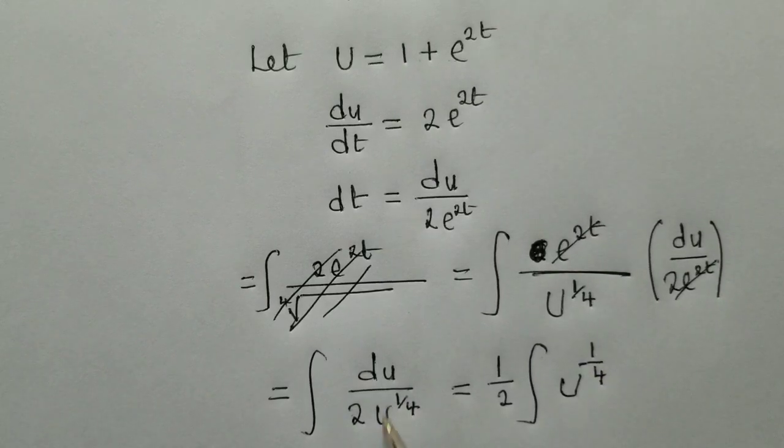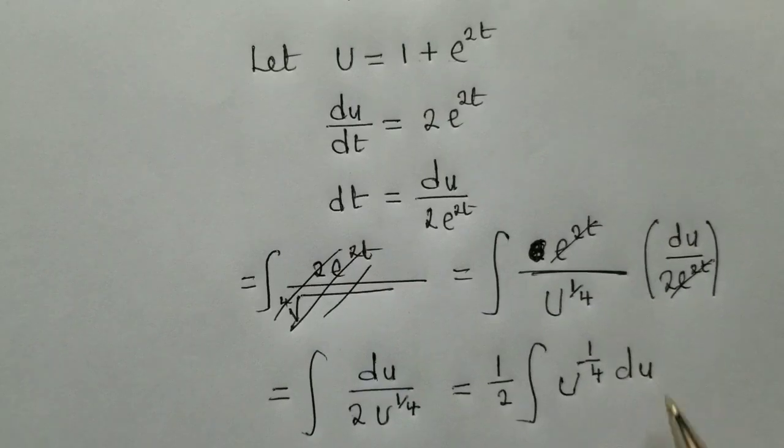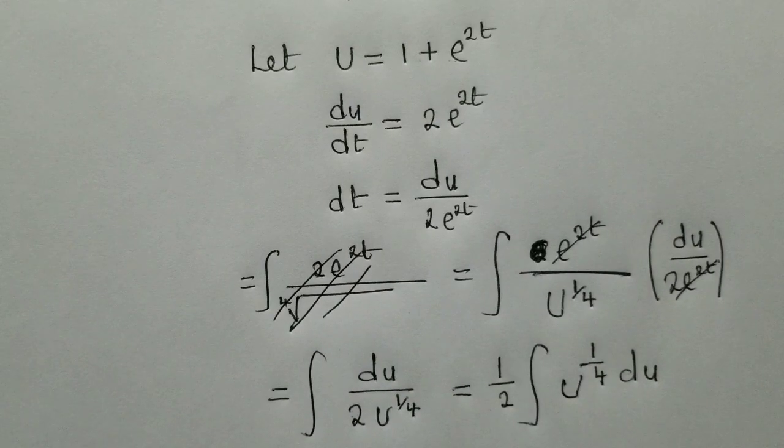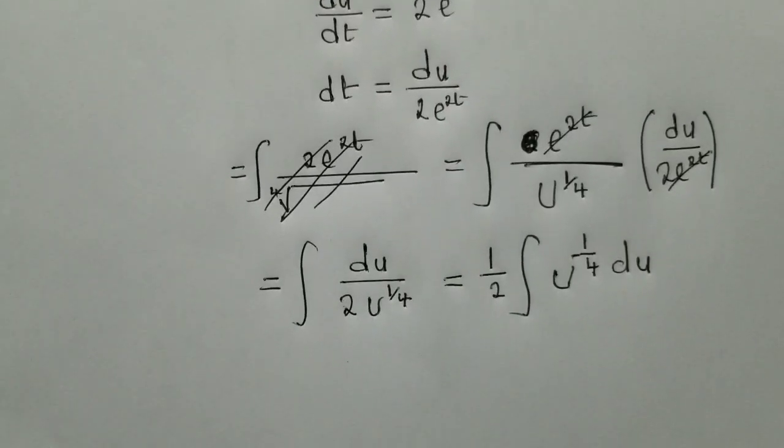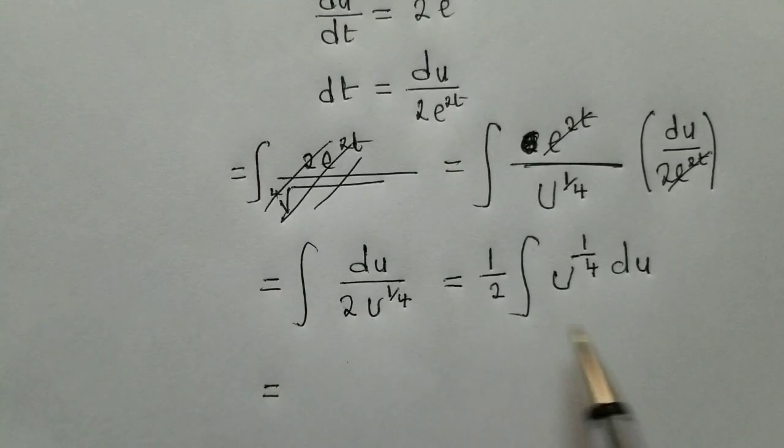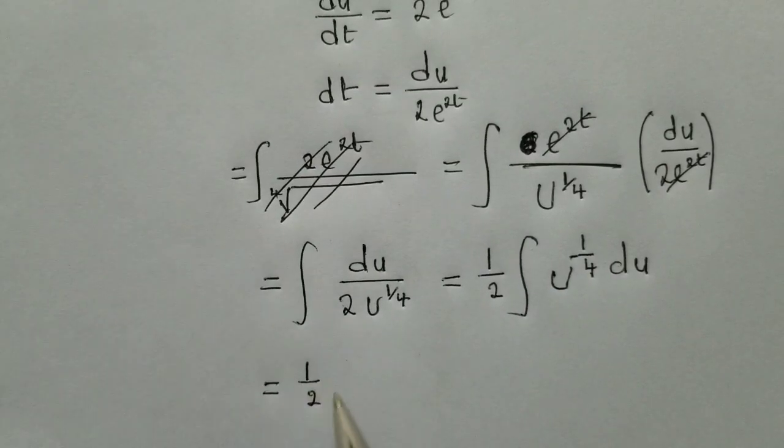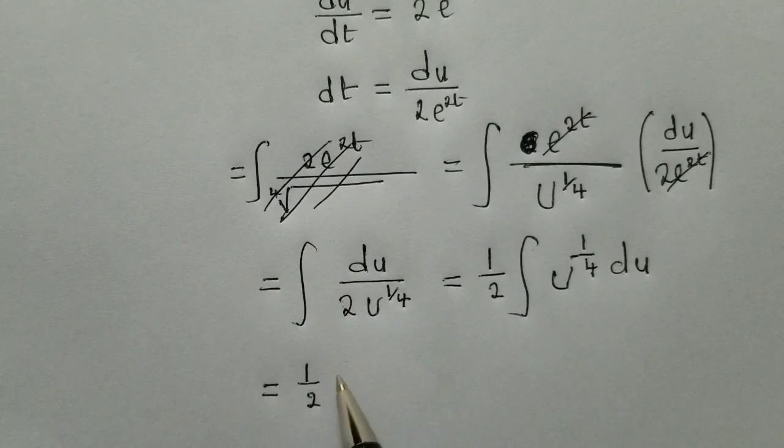The integral over u power 1 over 4. Negative 1 over 4. Using the laws of indices, this will go on top. This will go on top and it will be negative, negative 1 over 4. So now from this stage, we say equal to, when we integrate this, of course, it will be 1 over 2.